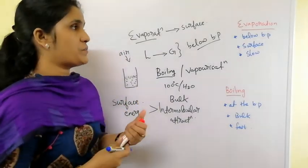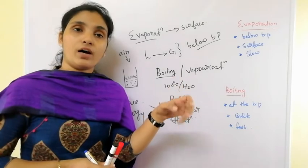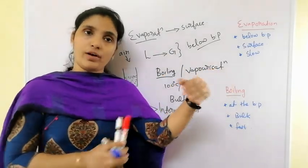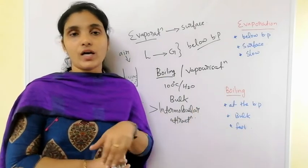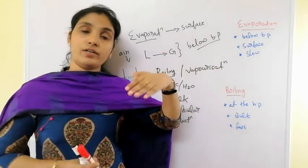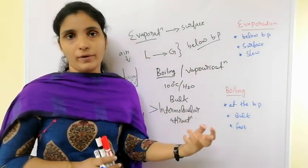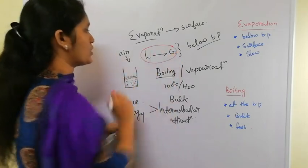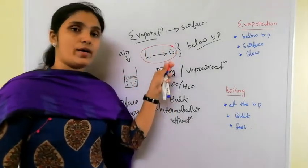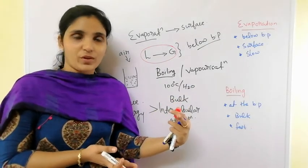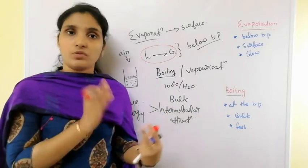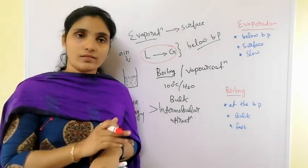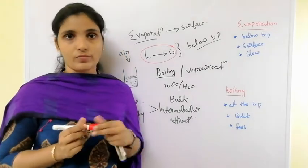Now let's discuss some examples of evaporation. If we wash our clothes, we hang them in the open air for drying. The liquid water present in the cloth converts to water vapor. There is no boiling involved — without prior knowledge, we might call it boiling, but the correct term here is evaporation.